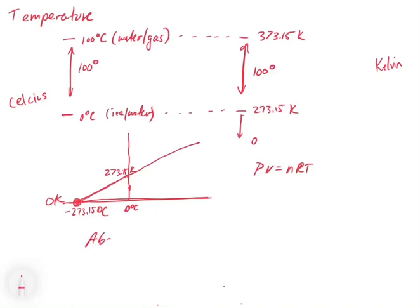So absolute zero, which is equal to zero Kelvin, is where you have no particle motion. Everything is stopped. It's absolutely still.